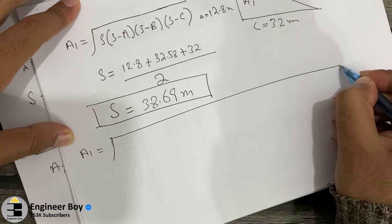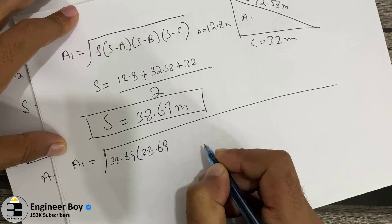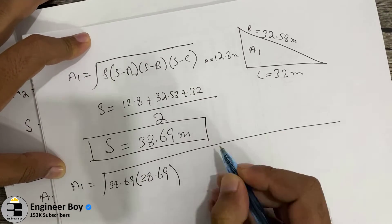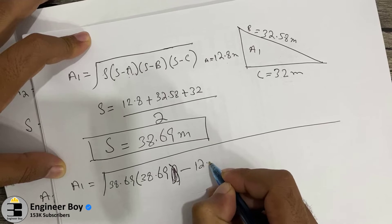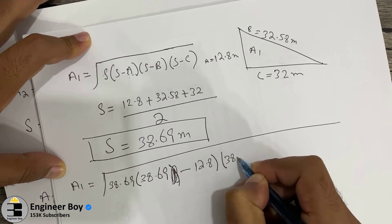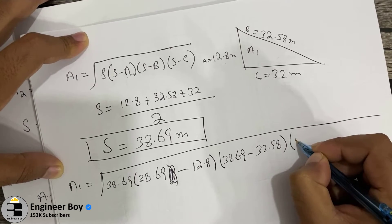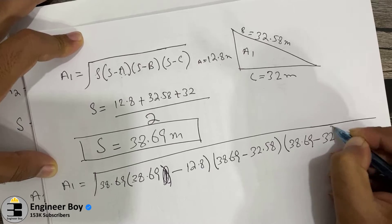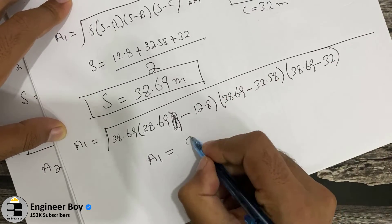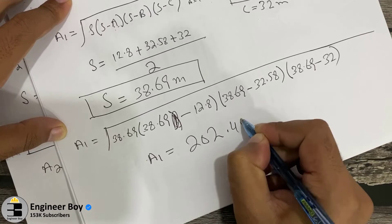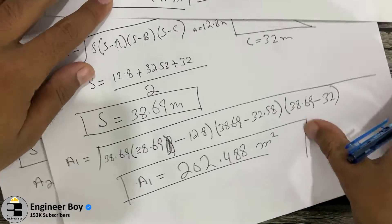So Area 1 = √(38.69 × (38.69 − 12.8) × (38.69 − 32.58) × (38.69 − 32)). Doing that calculation, Area 1 = 202.488 square meters.